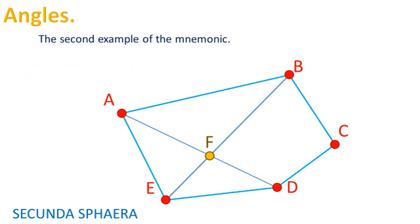The second example of the mnemonic starts with point A. Then draw segment AF, draw segment FC. This is the angle AFC. The vertex is in the point F.